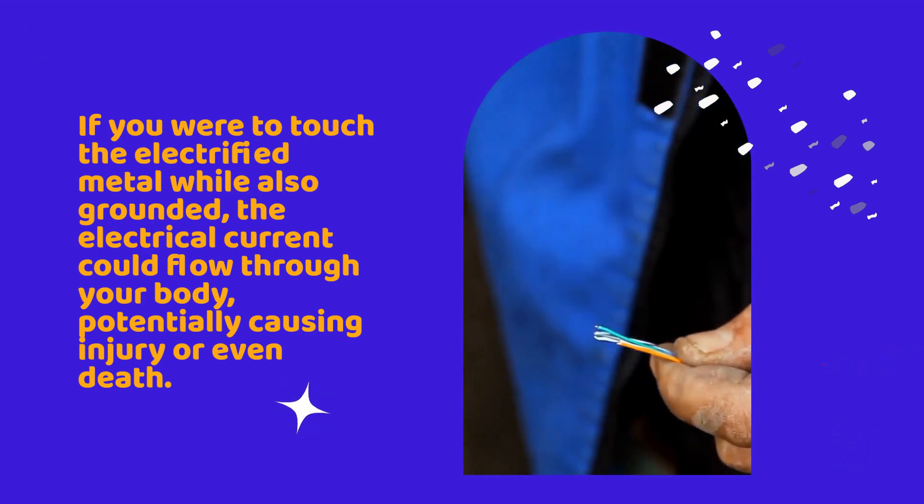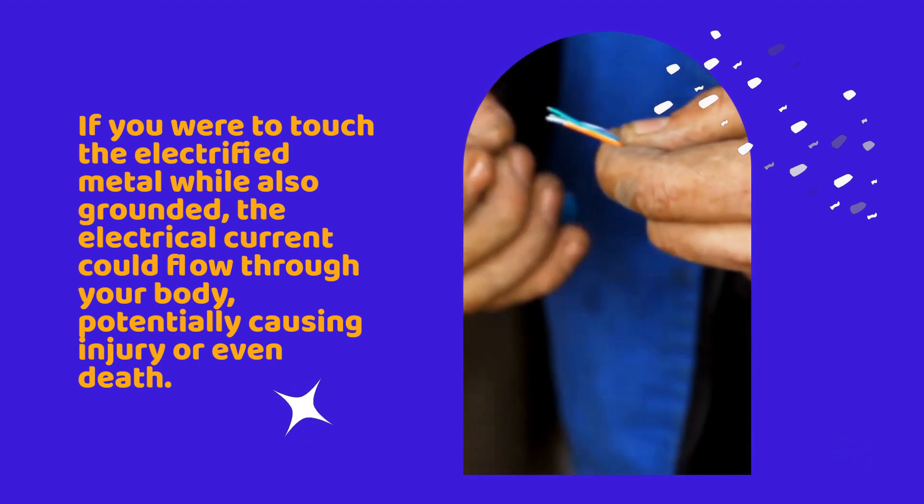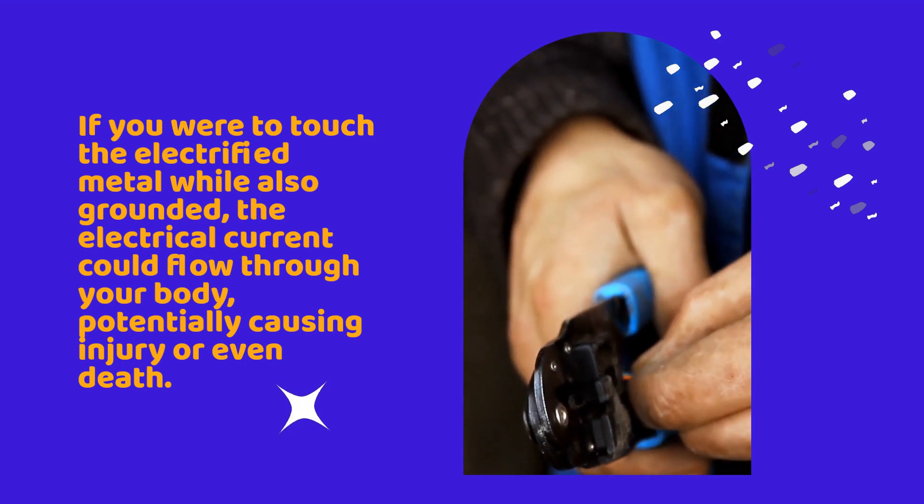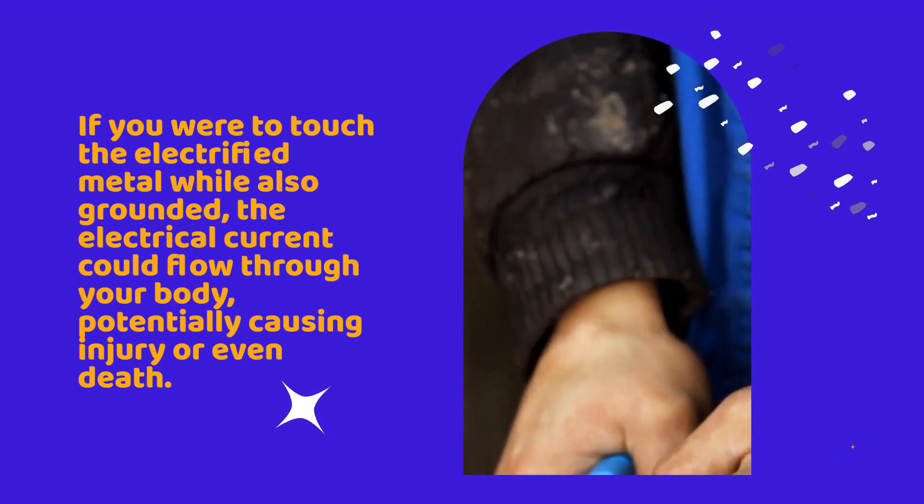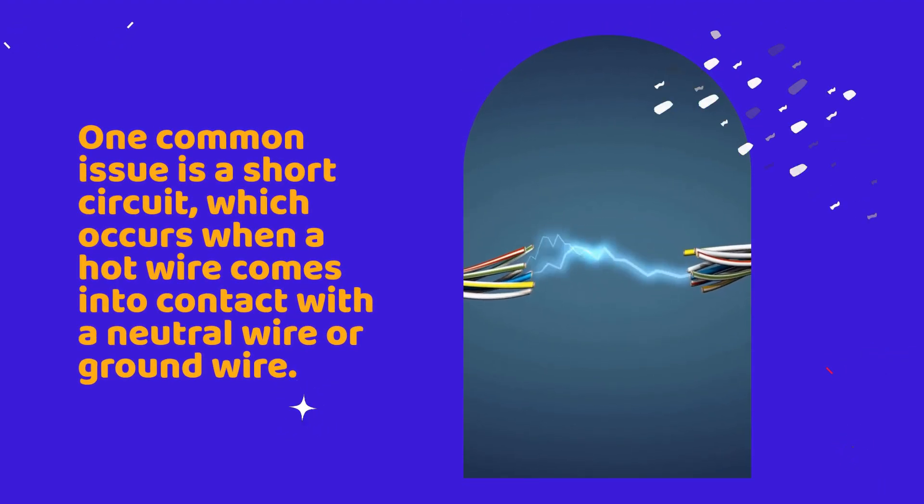But why do faults in wiring happen in the first place? There are several potential causes. One common issue is a short circuit, which occurs when a hot wire comes into contact with a neutral wire or ground wire. This can happen if the insulation on the wires is damaged, exposing the wires and allowing them to touch.